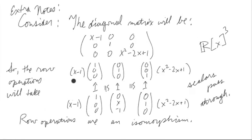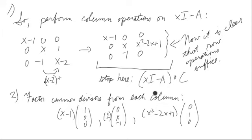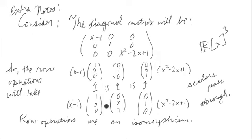Looking at that, just think about what the row operations would look like. They would move this guy — that guy is the first column right here — and row operations are just a map on each one of the columns. It's the same map applied to each of the columns. So this is going to have a destination, that's going to have a destination, that's going to have a destination. This is going to be the first column of the diagonal matrix, that's the second column, the third column. So that's exactly what we have here: first, second, and third column of the diagonal matrix.